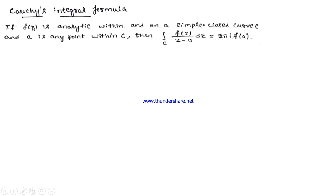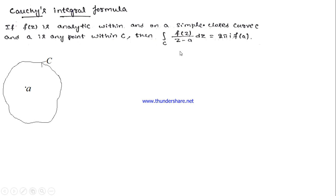Cauchy's integral formula states: if f(z) is analytic within and on a simple closed curve C, and A is any point within C, then integration of f(z)/(z − A) dz equals 2πi·f(A). Now, there is no issue from f(z) because it is analytic in this region. The problem is with (z − A) in the denominator — when z becomes A, the denominator becomes 0. So f(z)/(z − A) is not analytic at z = A. However, in this region, other than the point z = A, the integrand is analytic.